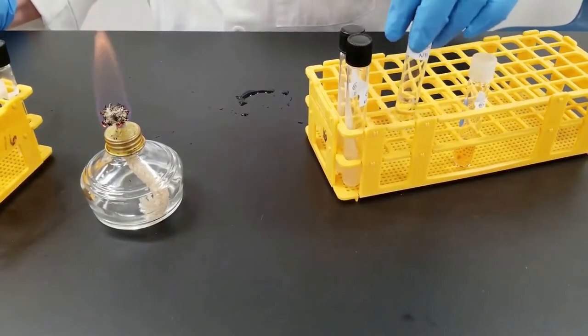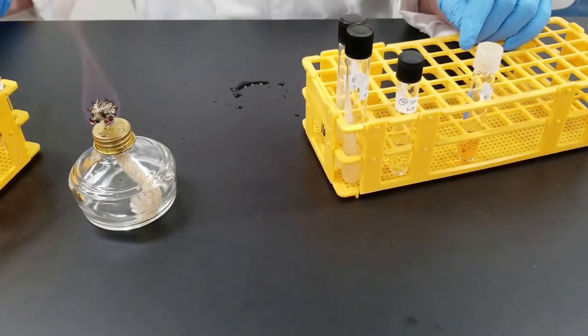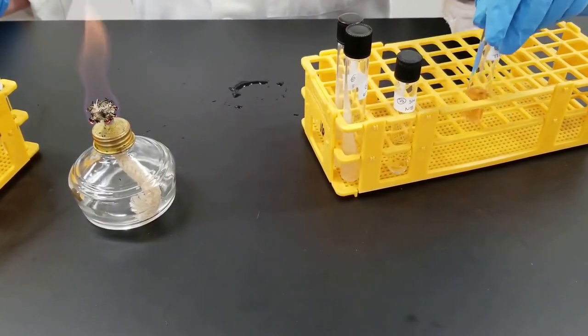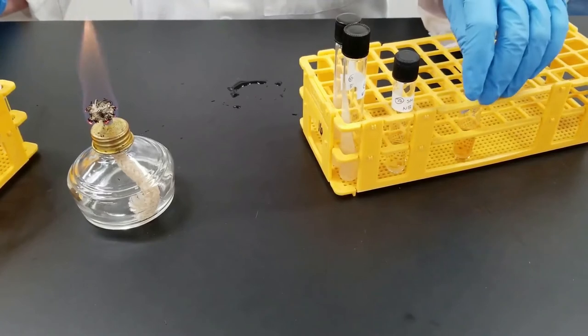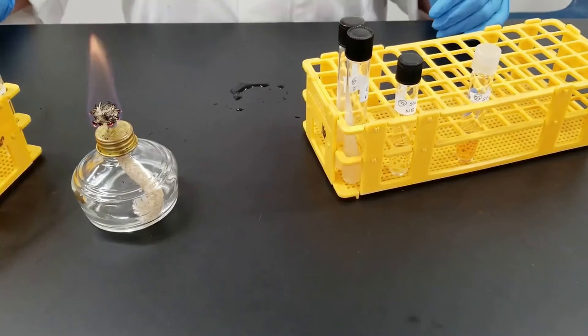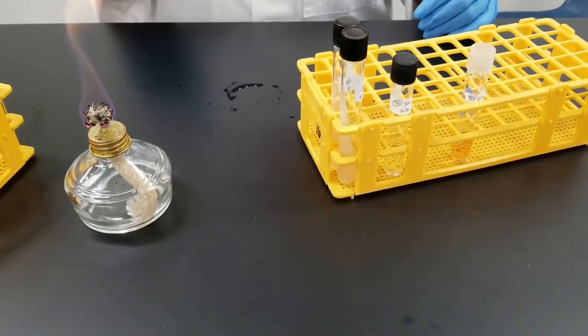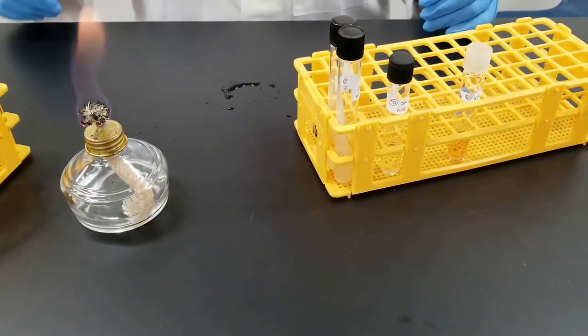We have the nutrient broth that we will grow it in. So we're going to go from a broth to a broth. We haven't done that very often. We're also going to use thioglycollate, which will give some indication for the oxygen requirements, depending on where it will grow. Will it grow at the top versus throughout the entire medium or only at the bottom?